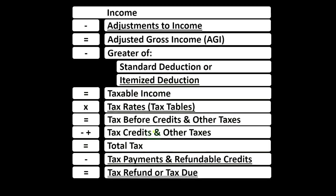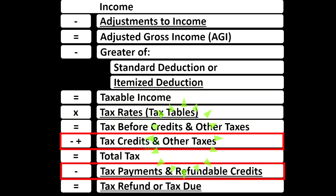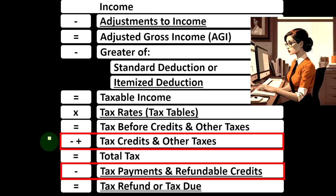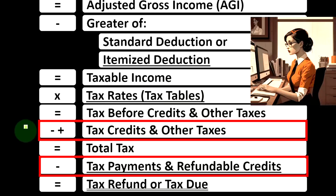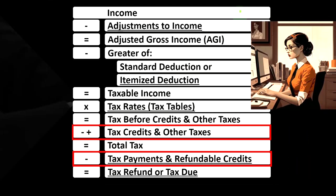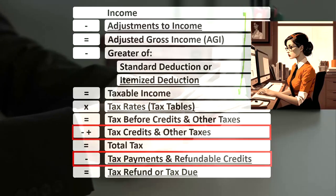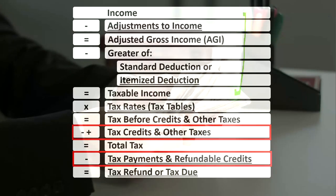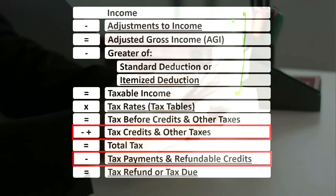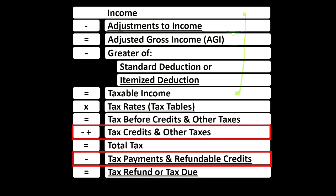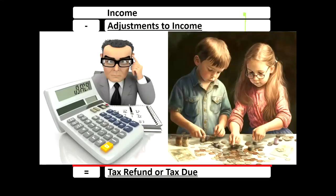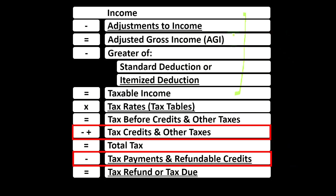Looking at the income tax formula, we're down at the bottom when dealing with the credits. Let's recap the income tax formula. The first half is in essence an income statement, where we have income and the above-the-line deductions — adjustments to income — to give us that very important subtotal: adjusted gross income, or AGI. It's important because credits and deductions often phase out when income levels go up.